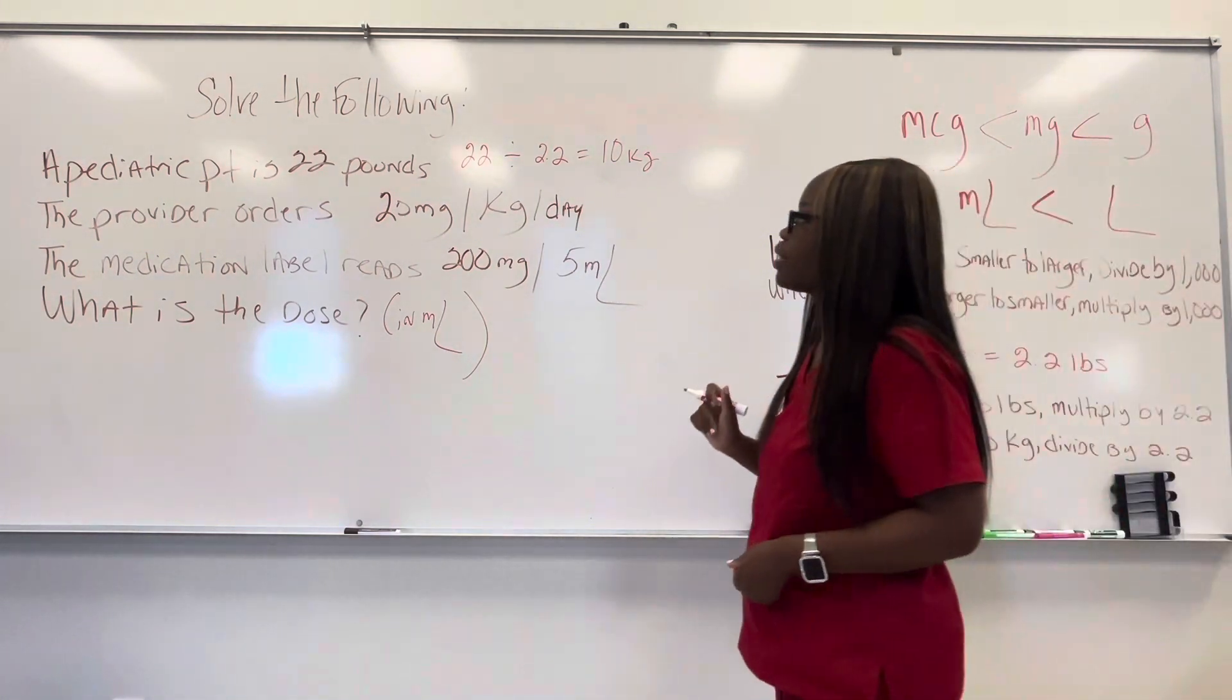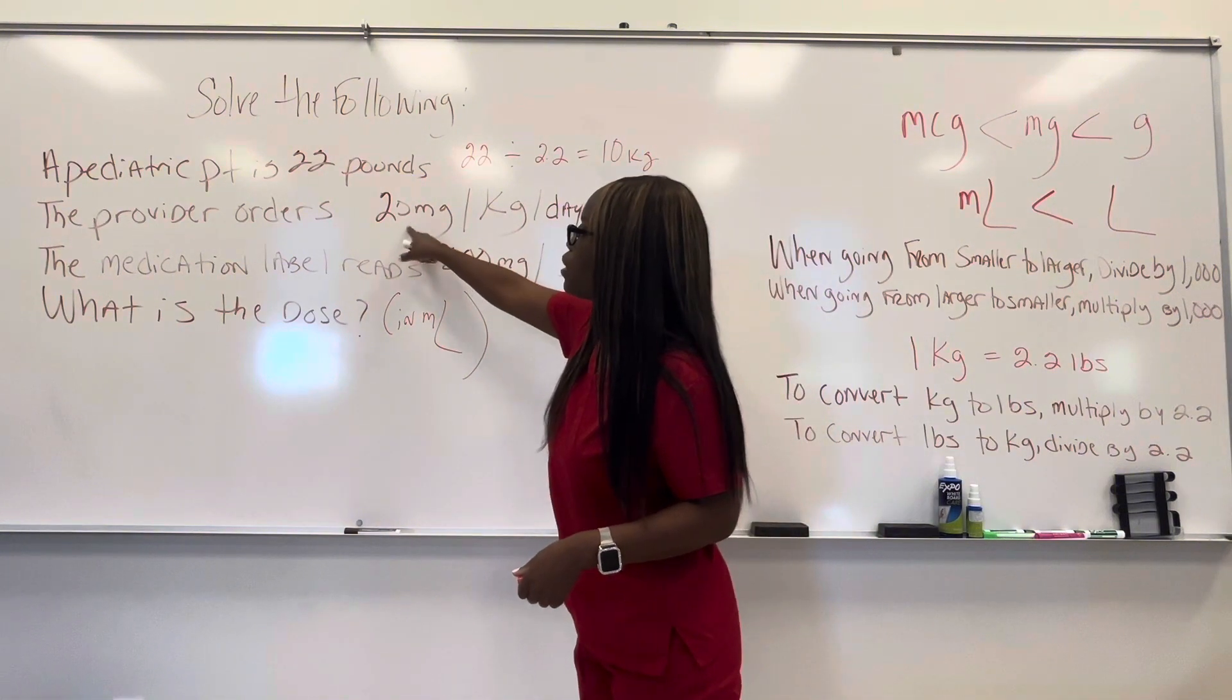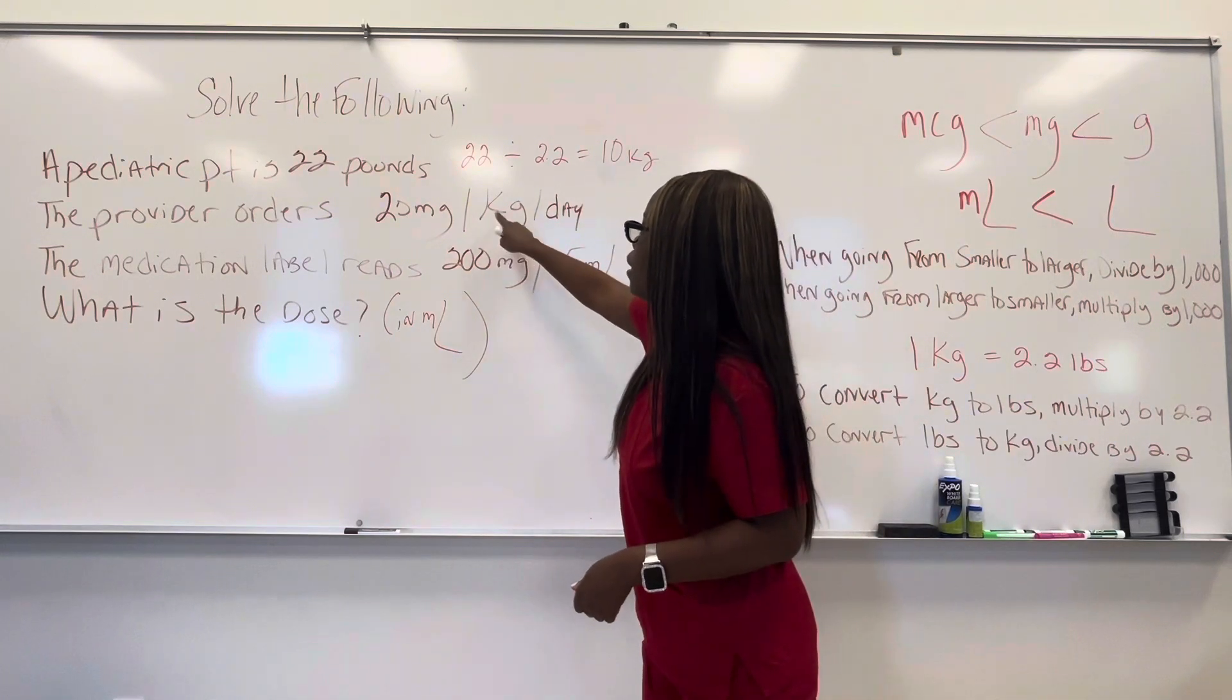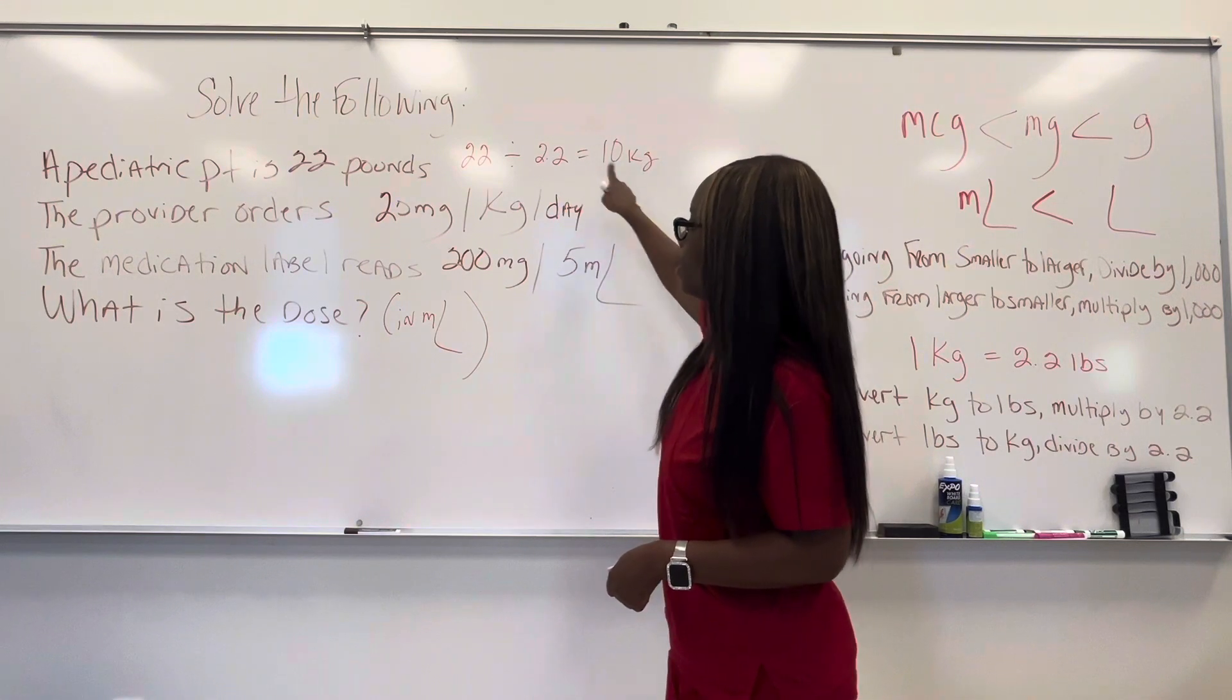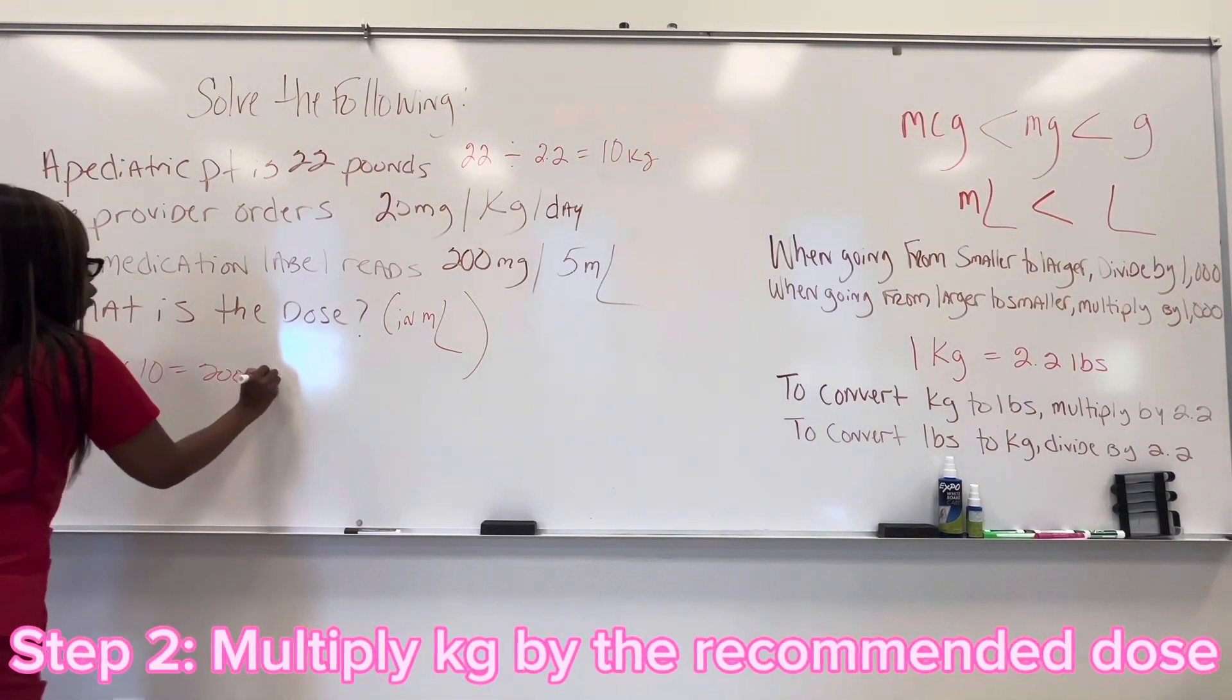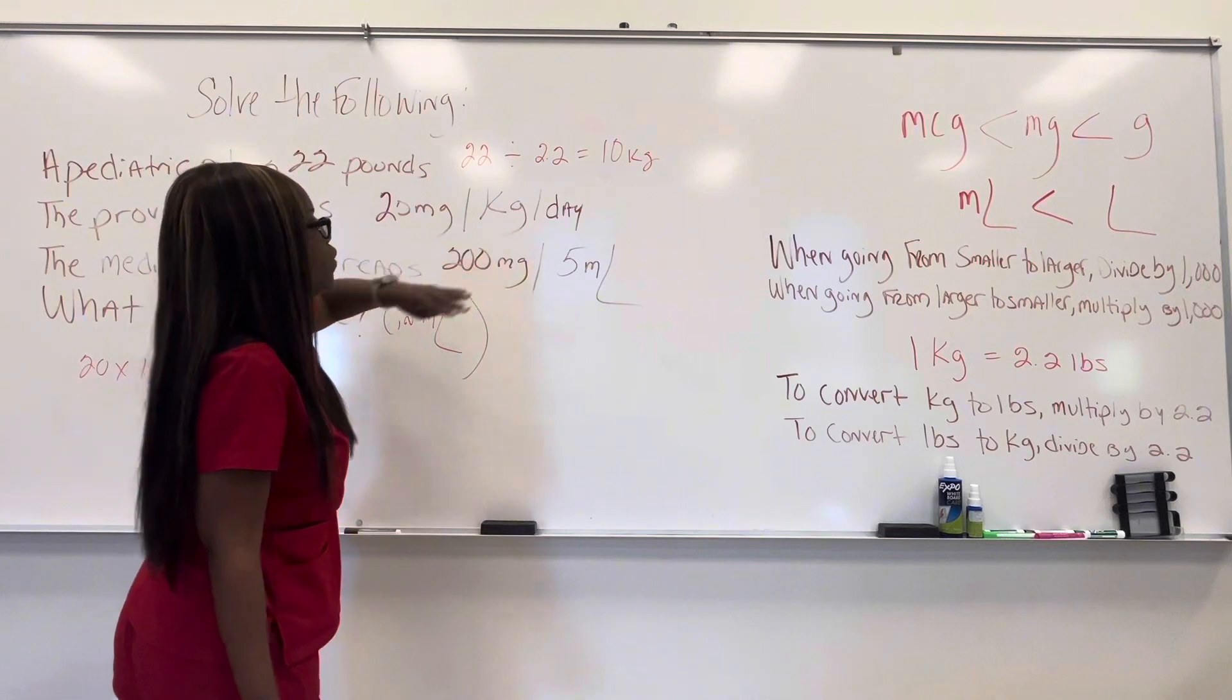So now, the provider says for the order that for every kilogram that that patient weighs, he wants that patient to have 20 milligrams of that medication. So for every kilogram within that 10 kilograms, he wants 20 milligrams, right? So what do we do? We have to multiply 20 times 10. We do 20 times 10. That gives us 200. So now we have the dose that the doctor wants. The provider's order is going to be 200 milligrams. So that's what he wants every day.